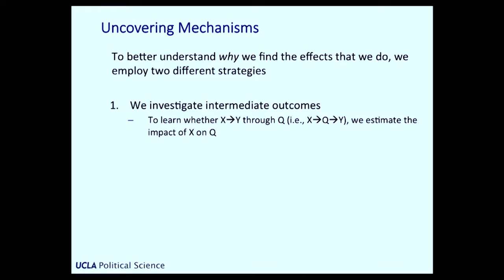Let me quickly say something about mechanisms — this is moving from the question of 'does it work' to 'why does it work?' We employ two different strategies to understand, to the extent we find an effect, why we're finding it. The first is we investigate intermediate outcomes. The logic is that if we want to know whether X is causing Y through some mechanism Q, we can estimate the impact of X on Q. To really do this formally requires very complicated mediation analysis, which we don't do — it's very controversial. But it's at least plausible that if X is affecting Y through Q, we should see an effect of X on Q. We identify a whole bunch of Qs capturing what that channel might be, and then estimate whether we see a relationship between X and these intermediate outcomes as a way of getting a handle on the mechanism.